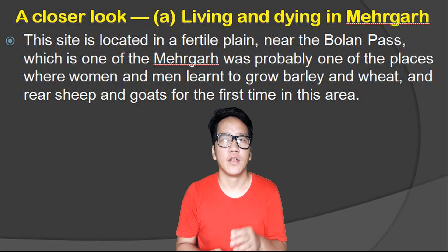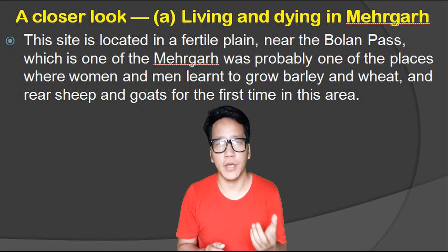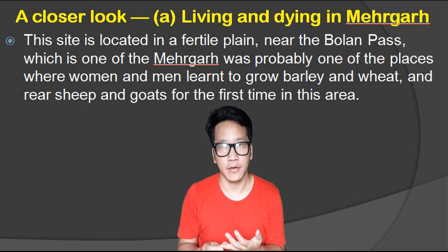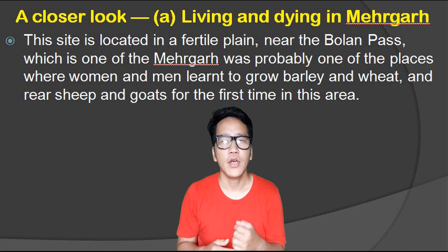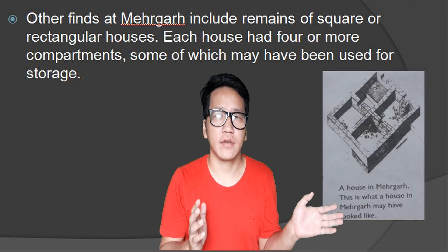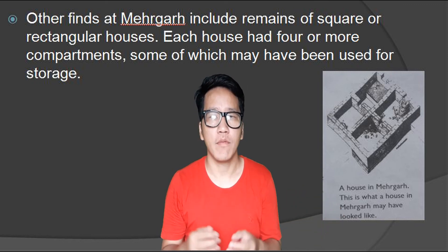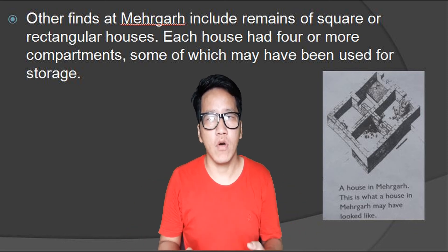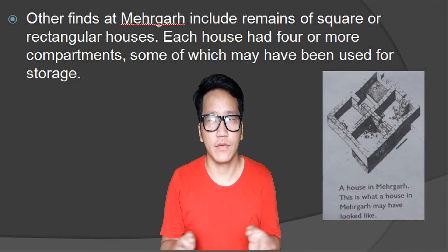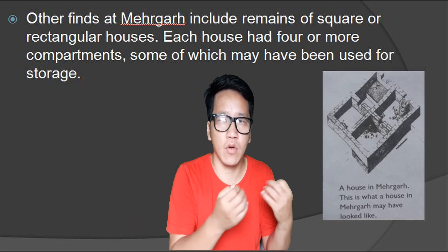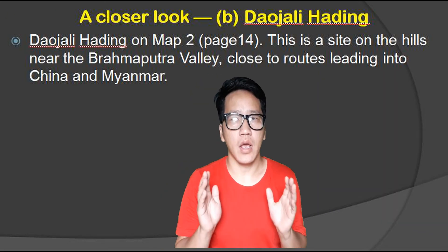A closer look — living and dying in Mehegra. Mehegra is a site located in a fertile plain near the Bolan Pass. Mehegra was probably one of the places where women and men first learned to grow barley and wheat and rear sheep and goats in this area. Other finds at Mehegra include remains of square or rectangular houses. Each house had four or more compartments, some of which may have been used for storing food grains, clothes or artifacts.